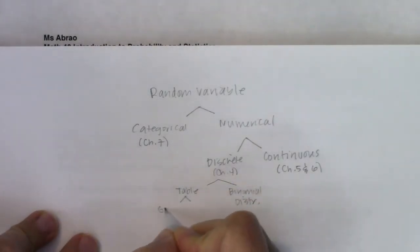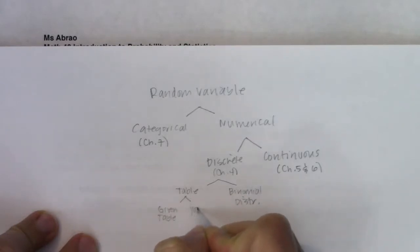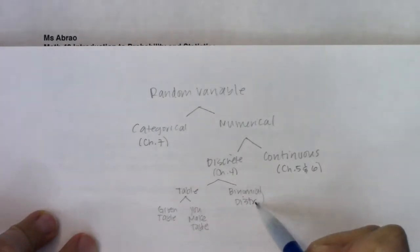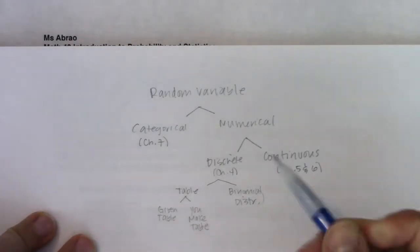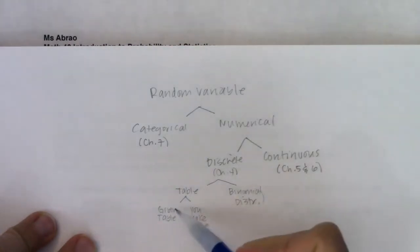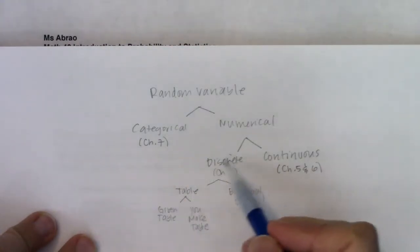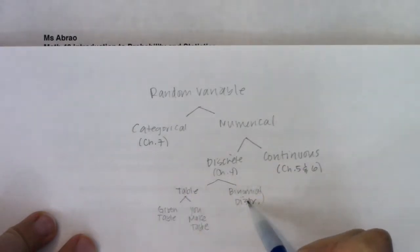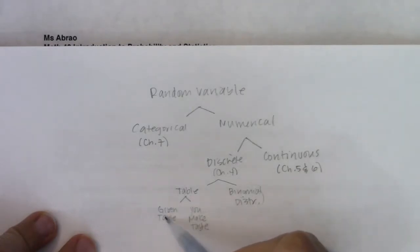If you have a table problem, either the table will be given to you, or you make the table yourself. Or there's the special case where we're dealing with a binomial distribution. Overall, those are the three types of problems in chapter 4. We're either going to make tables or we're going to find out it's the special case of a binomial distribution. If we're lucky, the table will be given to us; if we're not lucky, we'll have to make it ourselves.